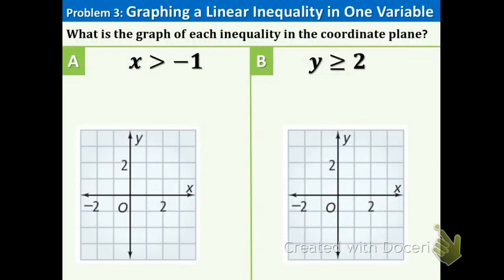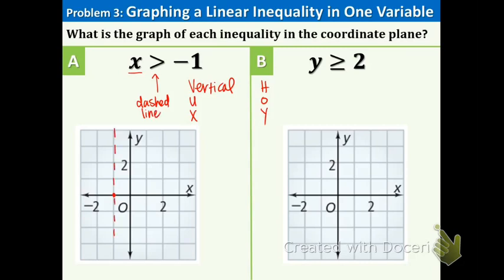We're continuing with linear inequalities and starting with problem 3: what is the graph of each inequality in the coordinate plane? As you can see, there's only one variable involved — unlike yesterday where we had two variables. We'll use the HOI VUX acronym. Since the first inequality starts with x, we use the VUX part, meaning we'll have a vertical line going through −1. There's no line underneath the symbol, so we draw a dashed vertical line with arrows at the end.